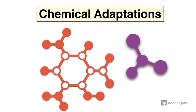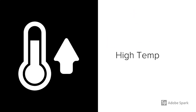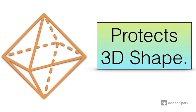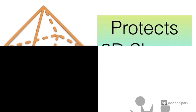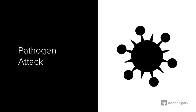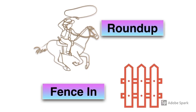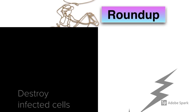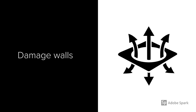Plants also have chemical adaptations to assist in their survival. For example, in adverse conditions such as high temperature, plants will produce heat shock proteins. These heat shock proteins wrap around plant enzymes, protecting their globular shape and preventing denaturation. Plants also have chemical adaptations to fight against pathogenic attack. Many plants can produce phytoalexins, which stimulate the production of specialized cell walls in infected cells, preventing the pathogen or disease from spreading elsewhere. The fenced-off infected cells are then destroyed. Some phytoalexins can actually damage the cell walls of invading pathogens.